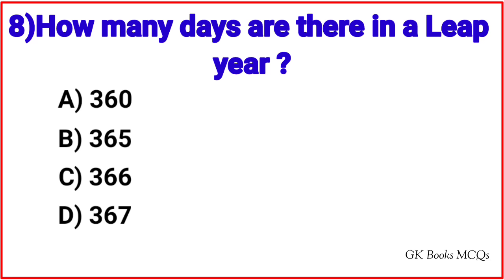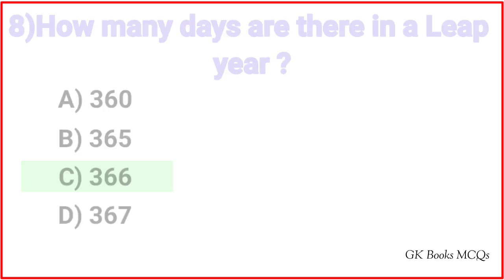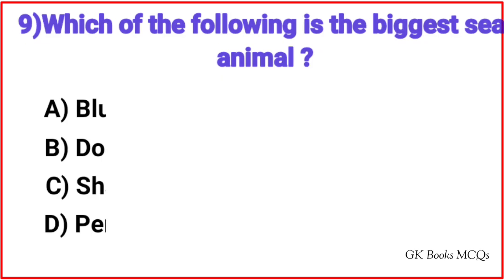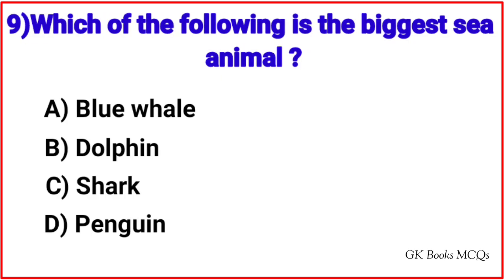Question 7: Which of the following is not an outdoor game? Correct answer is option D, Table Tennis. Question 8: How many days are there in a leap year? Correct answer is option C, 366 days.